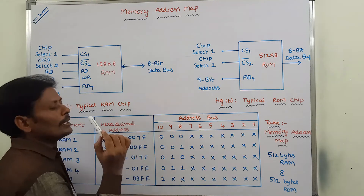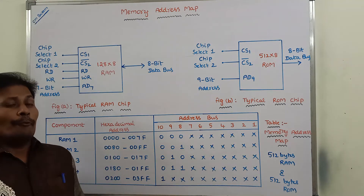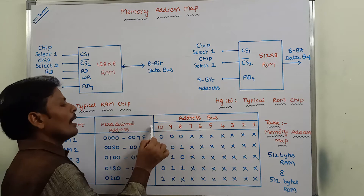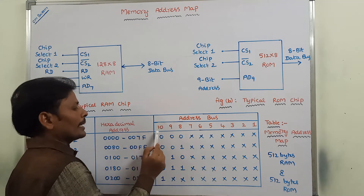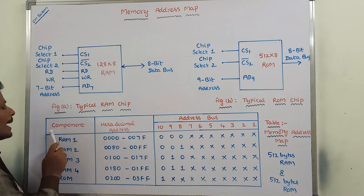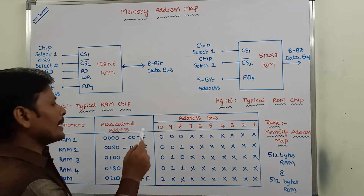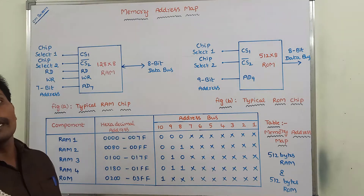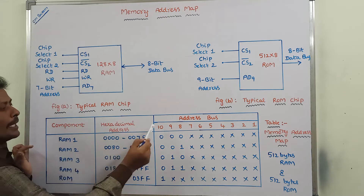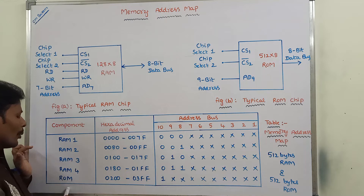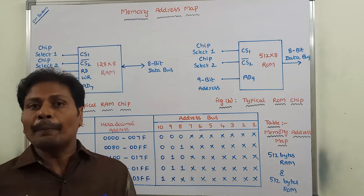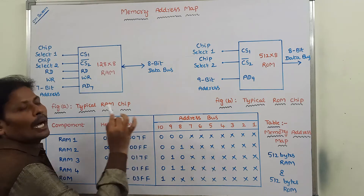Address line 10 is used to determine whether we are using a RAM chip or a ROM chip. If address line 10 contains a 0 value, it indicates that RAM chip is used. If address line 10 contains the value 1, it indicates that ROM chip is enabled.